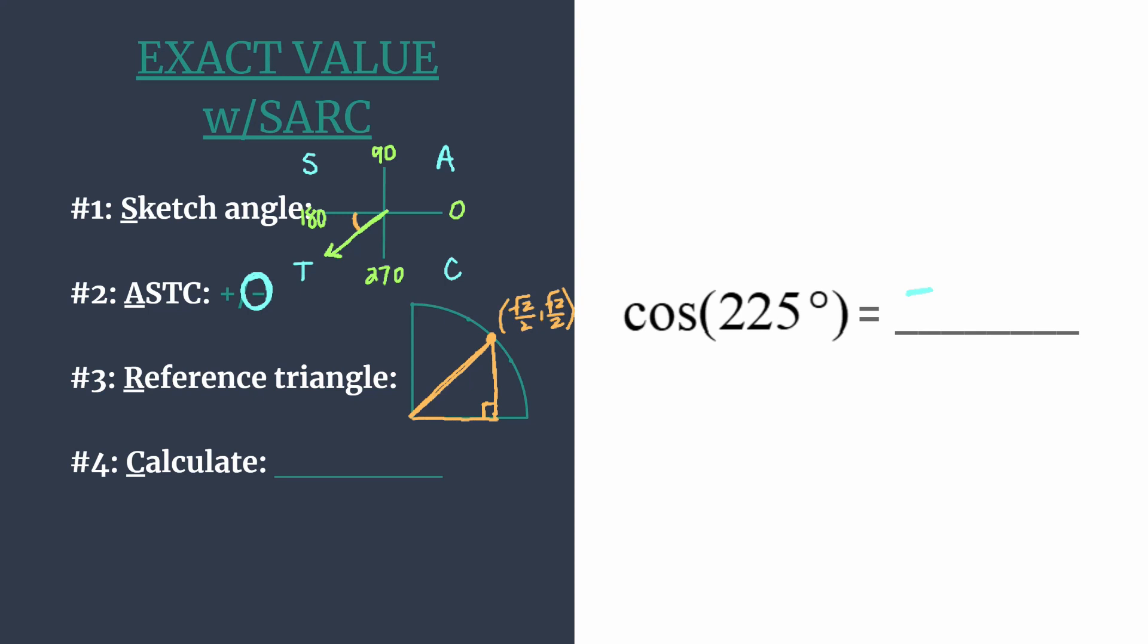Now we can move on to calculate. On the unit circle, the cosine of an angle is simply the x-coordinate. Not a lot of calculation going on here—just look at the x-coordinate. Remember that it's negative from step two. We know the cosine of 225 degrees is negative square root of two over two.